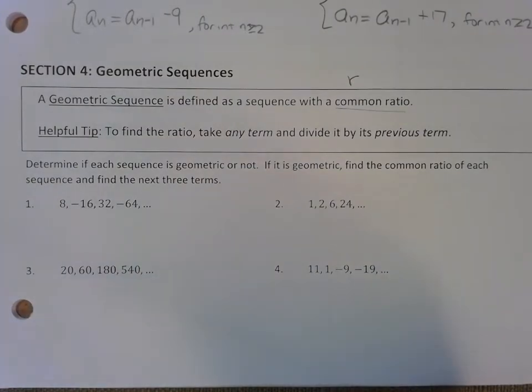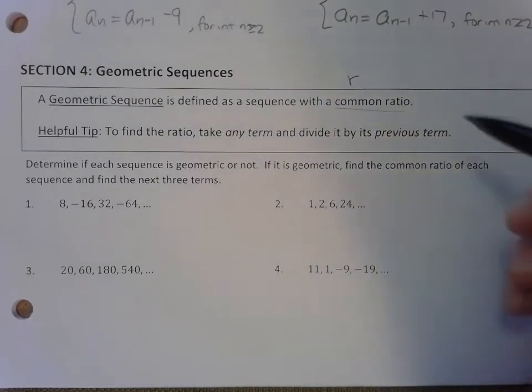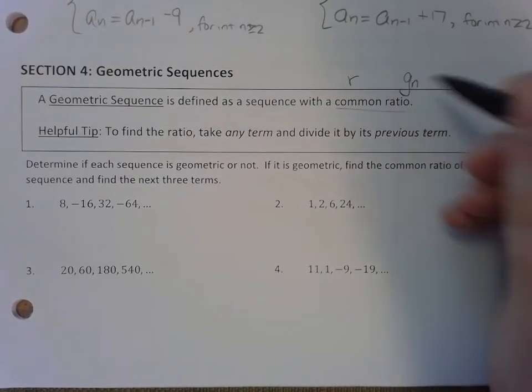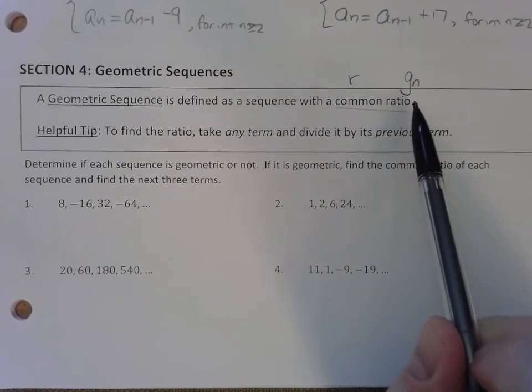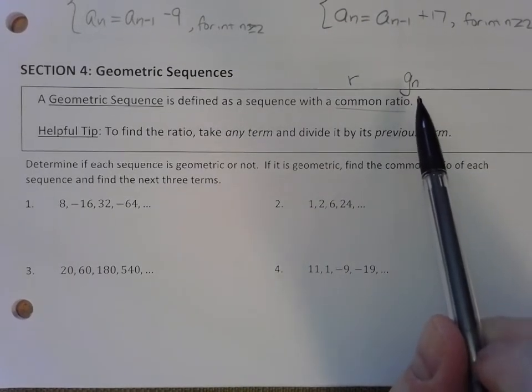Something I do when I teach this that sometimes a textbook won't do or delta math won't do is I switch a variable from a sub n to g sub n. When I talk about geometric sequences, I'm going to be using g sub n to talk about a specific term in a geometric sequence.